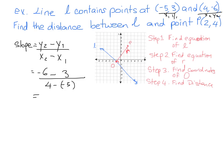And we get, that slope is negative 6 minus 3 over 4 minus negative 5. So when we work that all out, we get negative 9 over positive 9, which just gives us negative 1.